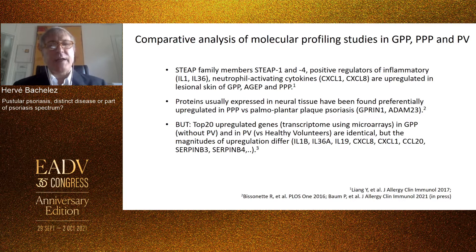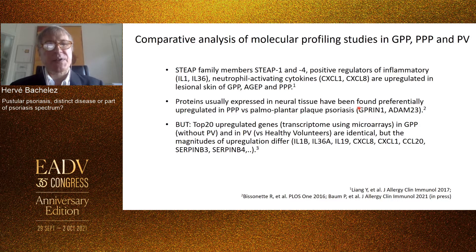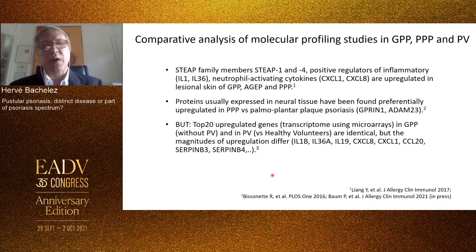The comparison of molecular profiling in GPP, PPP, and psoriasis vulgaris led to two major observations. First, there are some privately upregulated activities in neutrophilic variants, such as CF family members CF1, and proteins usually expressed in neural tissue such as GPRIN1 and ADAM23, as shown by the group of Johango Johnson. On the other hand, the group of Jim Krueger recently showed — currently in press in the Journal of Allergy and Clinical Immunology — that the top 20 upregulated genes in GPP and psoriasis vulgaris are identical, but what differs is the magnitude of upregulation, and among these genes are IL-1β and IL-36α encoding genes.